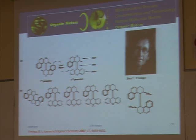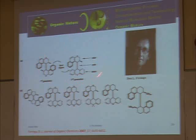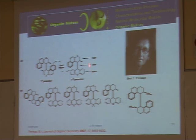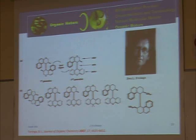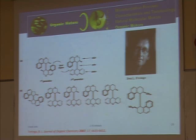A better generation of motors was also designed by Feringa. This generation is better because it has well-defined components: a stator, which fixes the motor to a surface — an additional benefit the first-generation motor did not have — an axle, and a rotor. The rotor is the unit that spins around the stator. An additional benefit is that this system rotates 1.3 million times faster than the first-generation systems. As I mentioned, it can be added on surfaces, and I will show you examples.